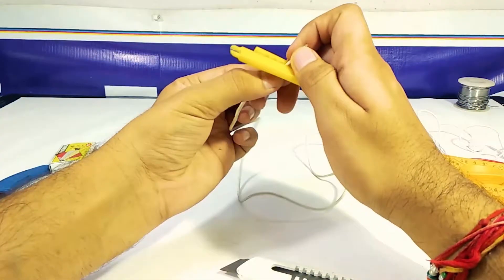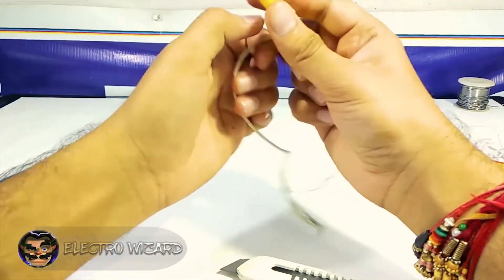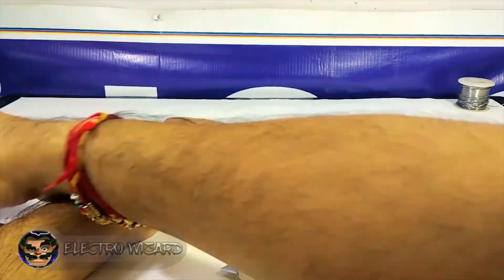Now we have to connect the rest part of the lead to the 3.5 jack. Repeat the previous procedure to clean the surface of the wires.